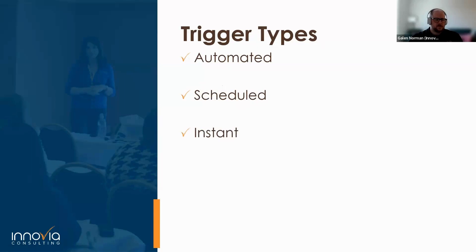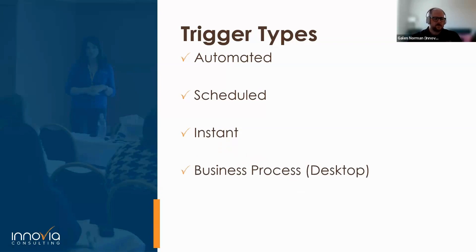Another type of trigger is instant. Instant triggers generally take the form of buttons. These buttons can either be inside Power Automate and require a user to log in to initiate, or more commonly, they can be programmed into Microsoft and third-party programs to allow manual triggering of a flow. The last type is a business process trigger, also called a desktop trigger - a sort of hybrid between automated and instant triggers. This type requires a human to push a button that transitions them to the next step of a process, for instance navigating between multiple pages in different programs.